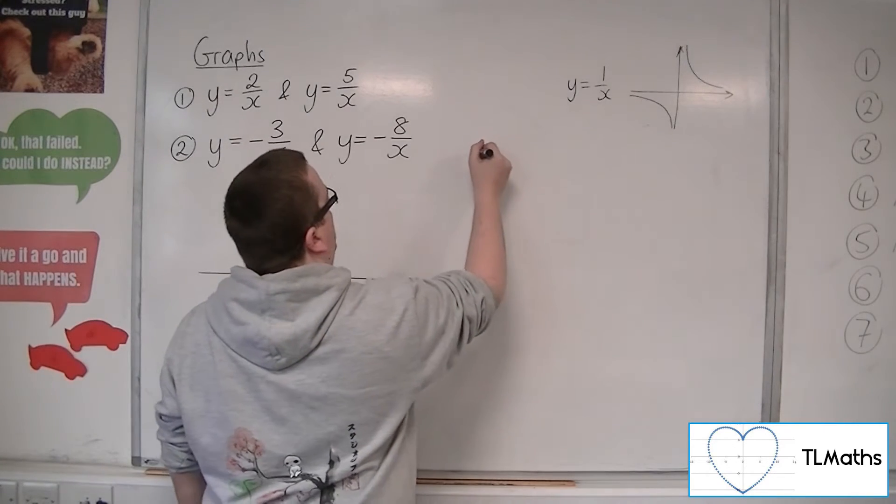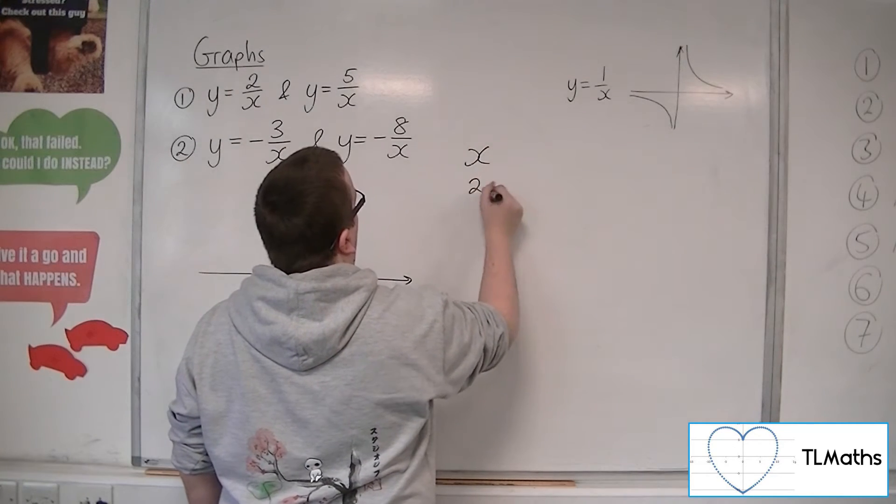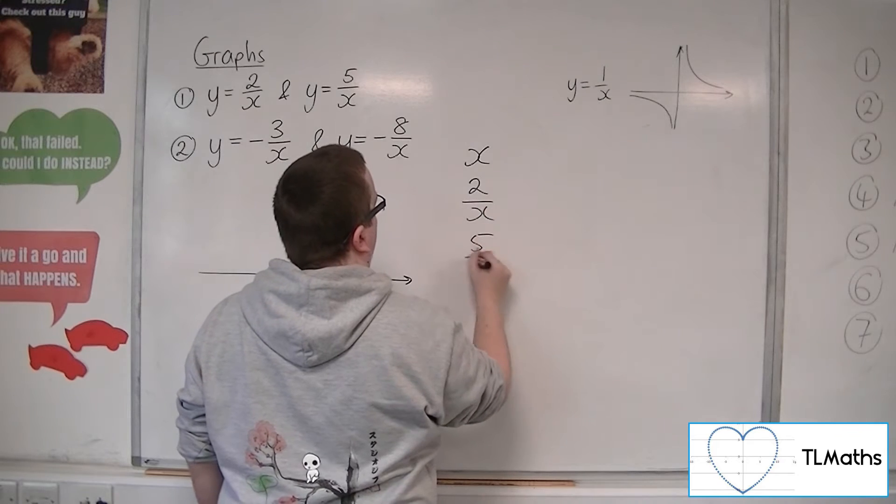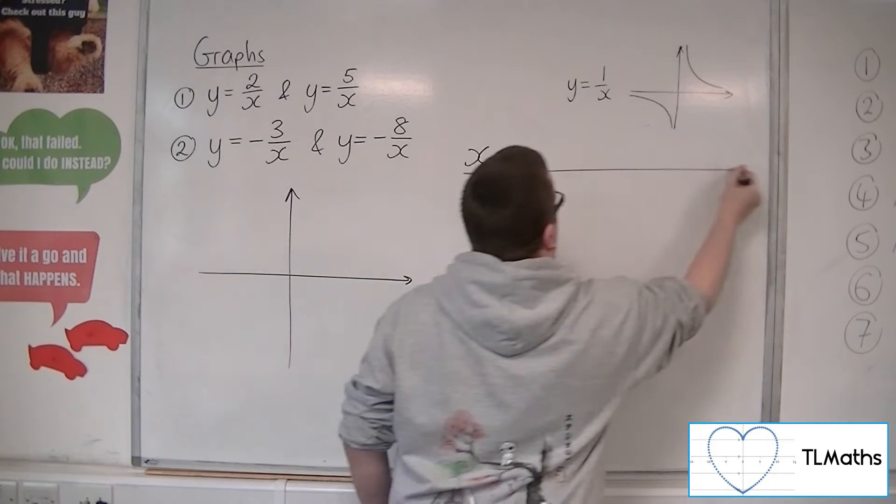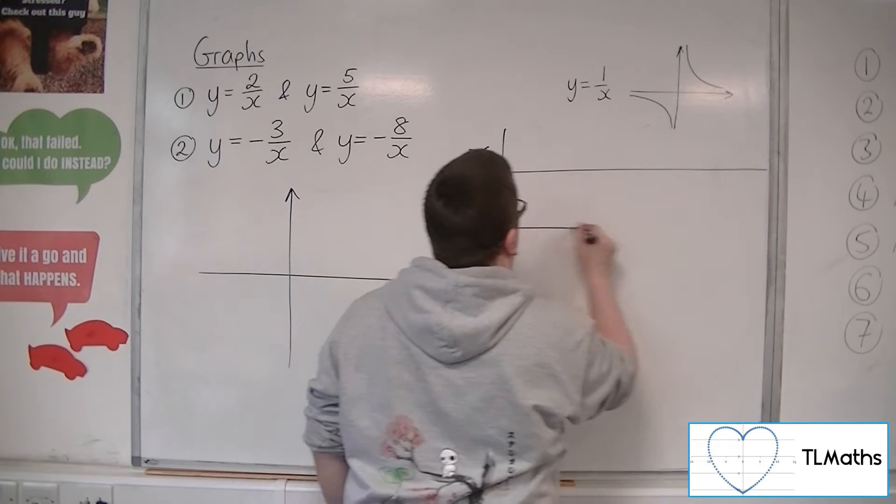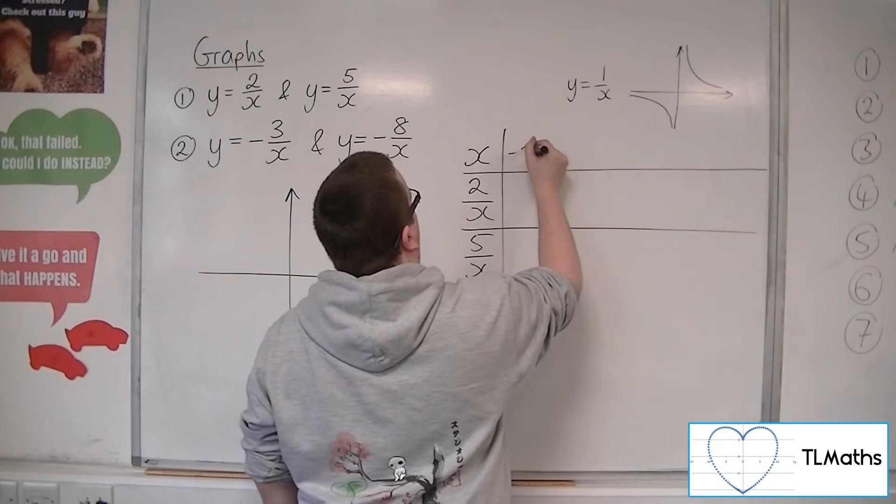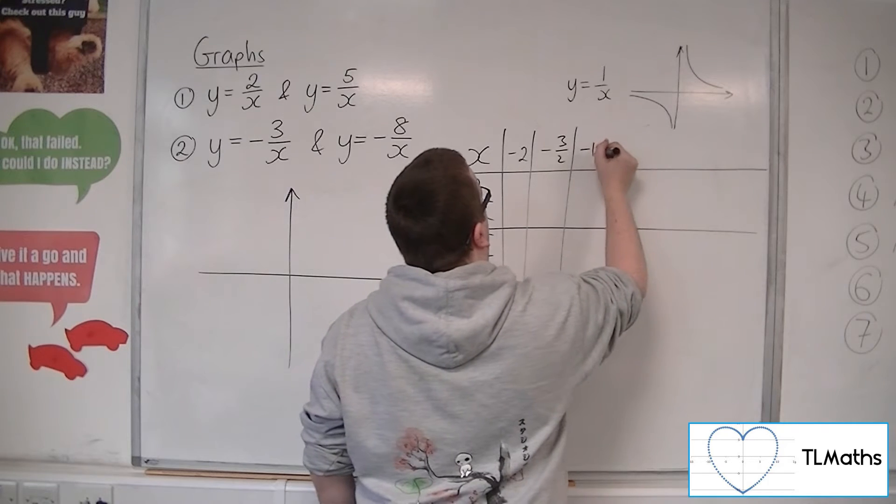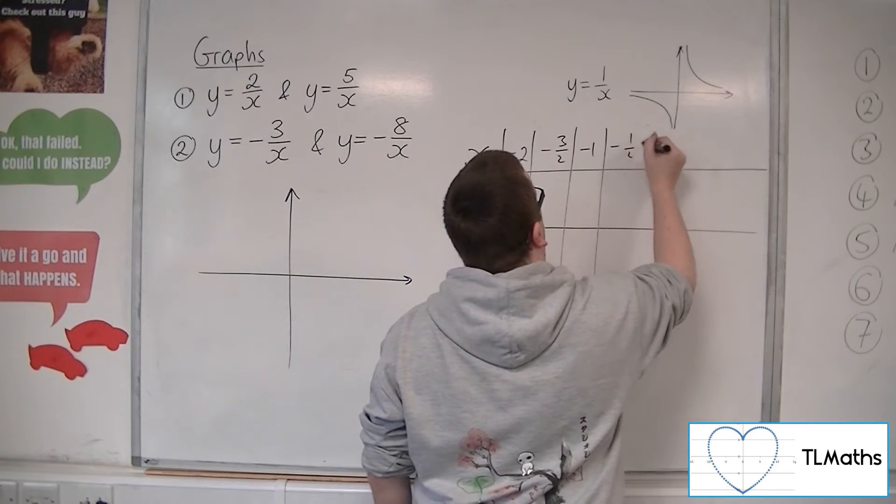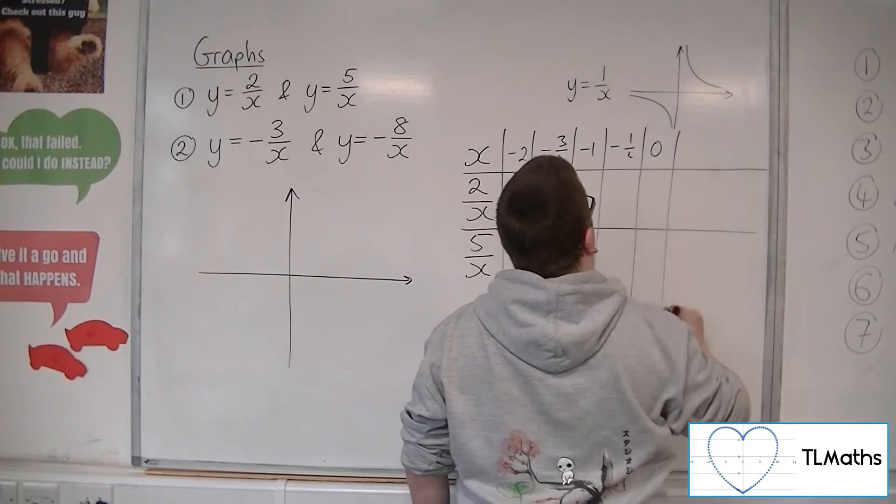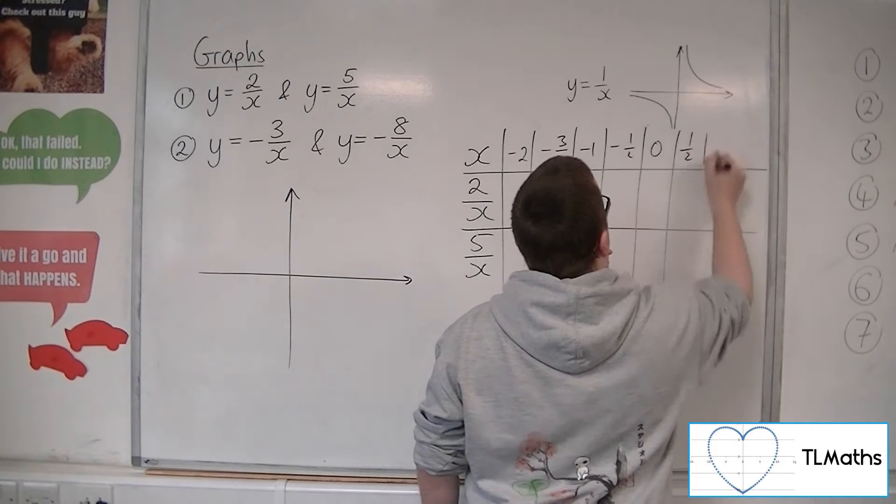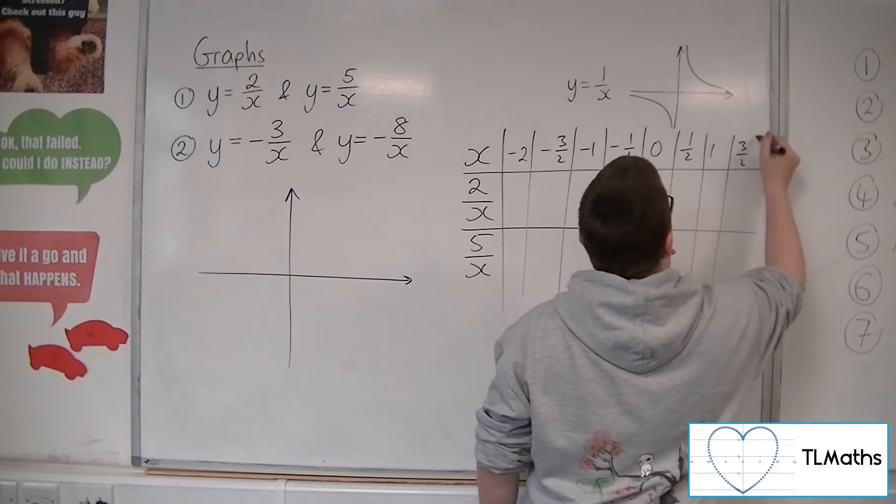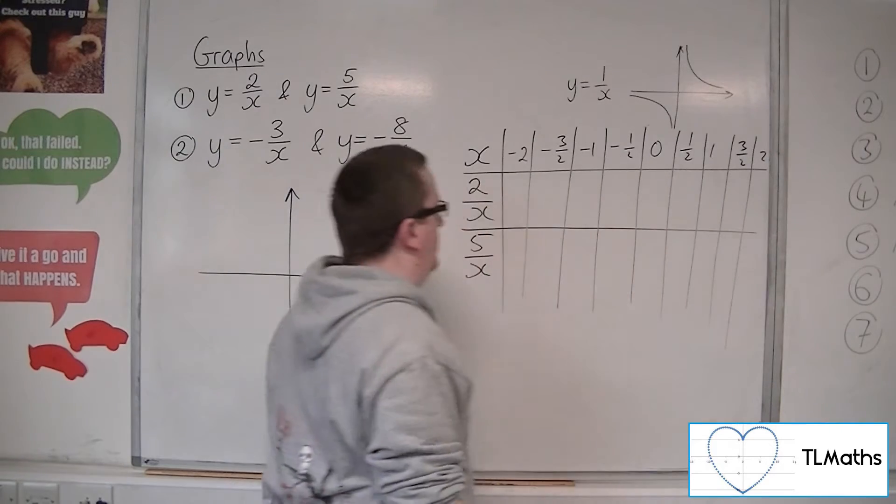So let's plot some points. We'll have x's, 2 over x and 5 over x. And let's do one big table. So if we start at minus 2, we'll have minus 3 halves, minus 1, minus 1 half, 0, 1 half, 1, 3 halves, and 2.